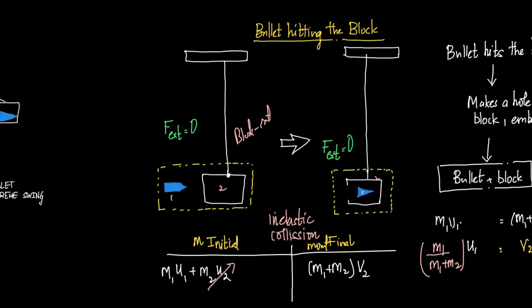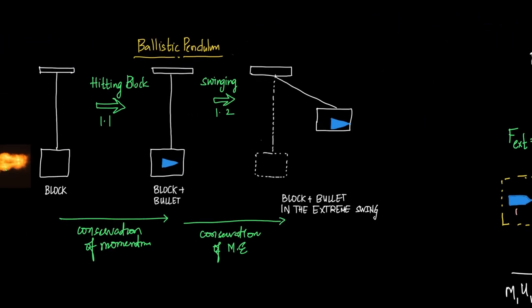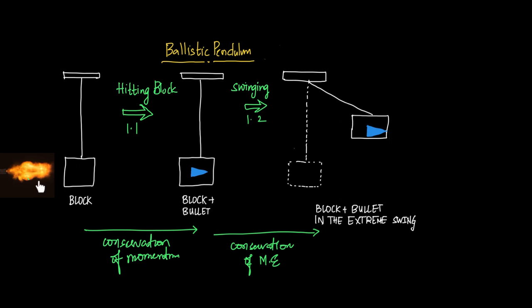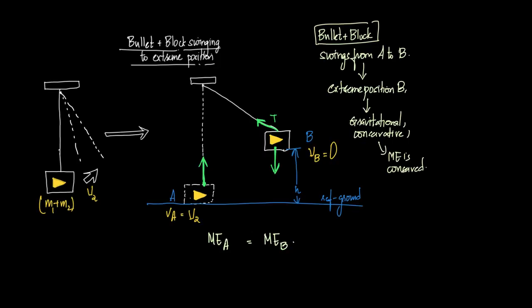Now we go to case 1.2 — the bullet plus block swinging to the extreme position. The block will swing from initial position A to the extreme position B. At the extreme position B, the velocity VB = 0. The velocity at A is V2, which we calculated as (M1 / (M1 + M2)) × U1.